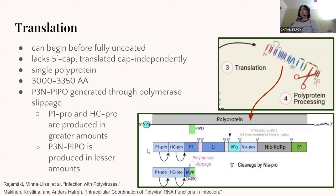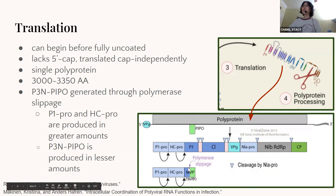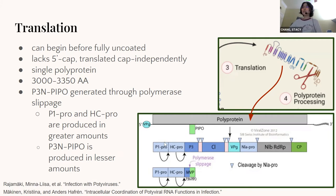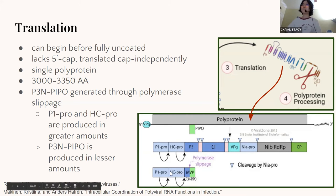It produces a single polyprotein of 3,000 to 3,350 amino acids. There is also a PIPO protein that is important but not part of this larger polyprotein, because it's generated through polymerase slippage. As the polymerase goes down, when it reaches the P3 area, it might stutter a little bit and produce a shorter polyprotein. After cleavage, when P1 cleaves itself and HC-Pro cleaves itself, this PIPO protein can float around. As a result, we see much higher proportions of these early proteases, lower proportions of PIPO, and roughly equal proportions across the rest.